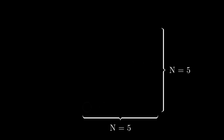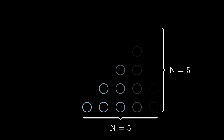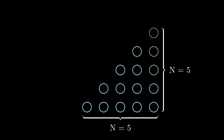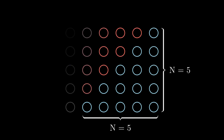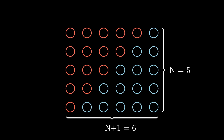Let's say n is 5. You can draw the sequence 1, 2, 3, 4, 5 in vertical bars. Then, when you add the mirrored triangle shape, you can see a resulting rectangle with the dimensions n and n plus 1 — the size being twice of what we started with.